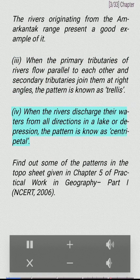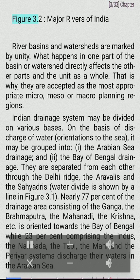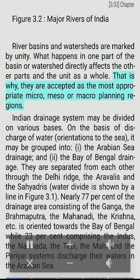When rivers discharge their waters from all directions into a lake or depression, the pattern is known as centripetal. River basins and watersheds are marked by unity — what happens in one part of the basin or watershed directly affects the other parts. That is why they are accepted as the most appropriate micro, meso, or macro planning regions.